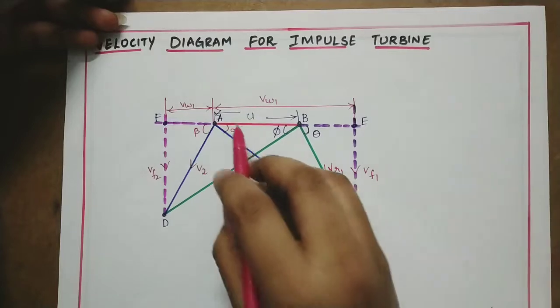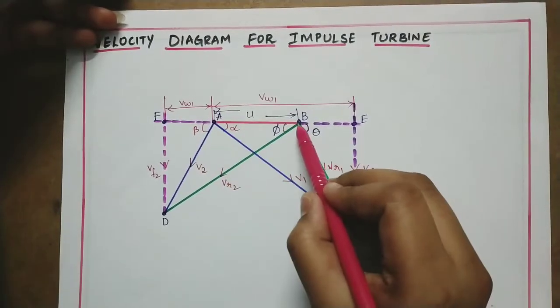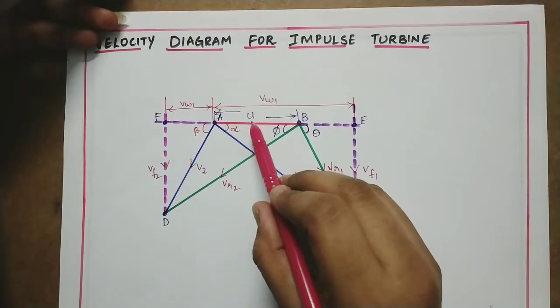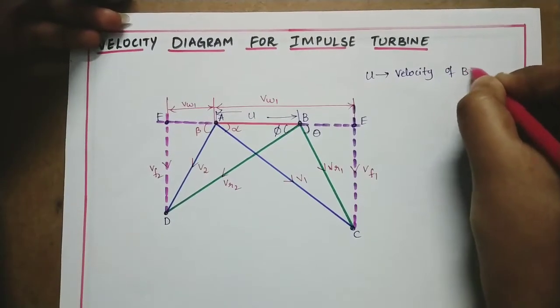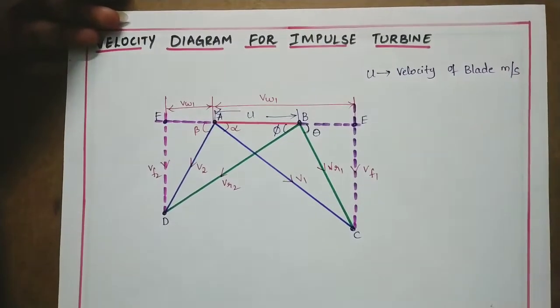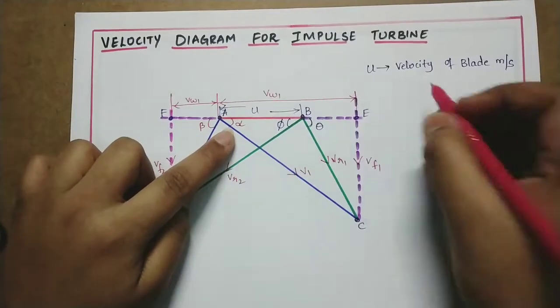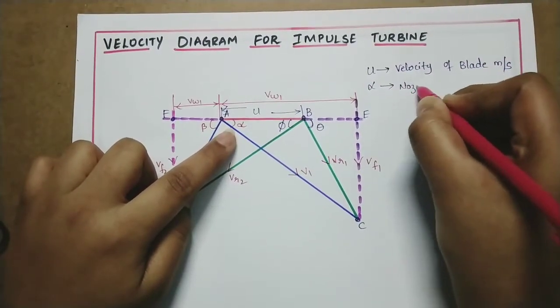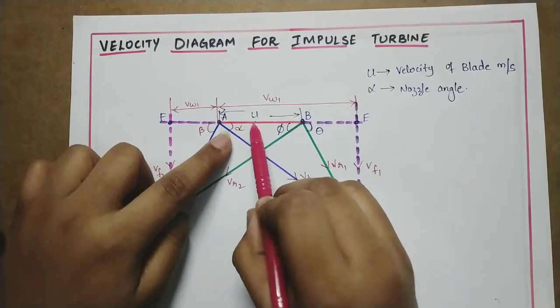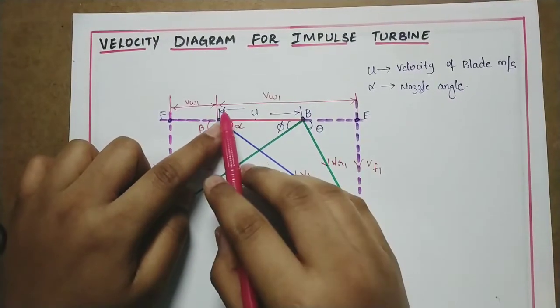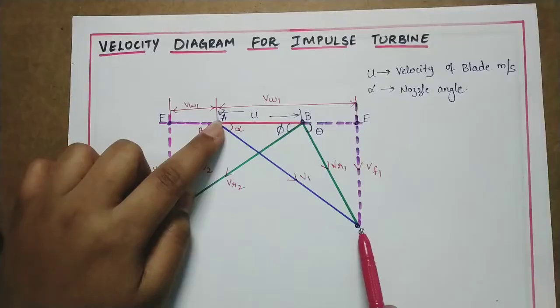First you have this length line AB. First draw AB line. This is U, that is velocity of the blade. U is the velocity of the blade in meter per second. Then you will get an alpha angle - nozzle angle. Alpha is the nozzle angle.